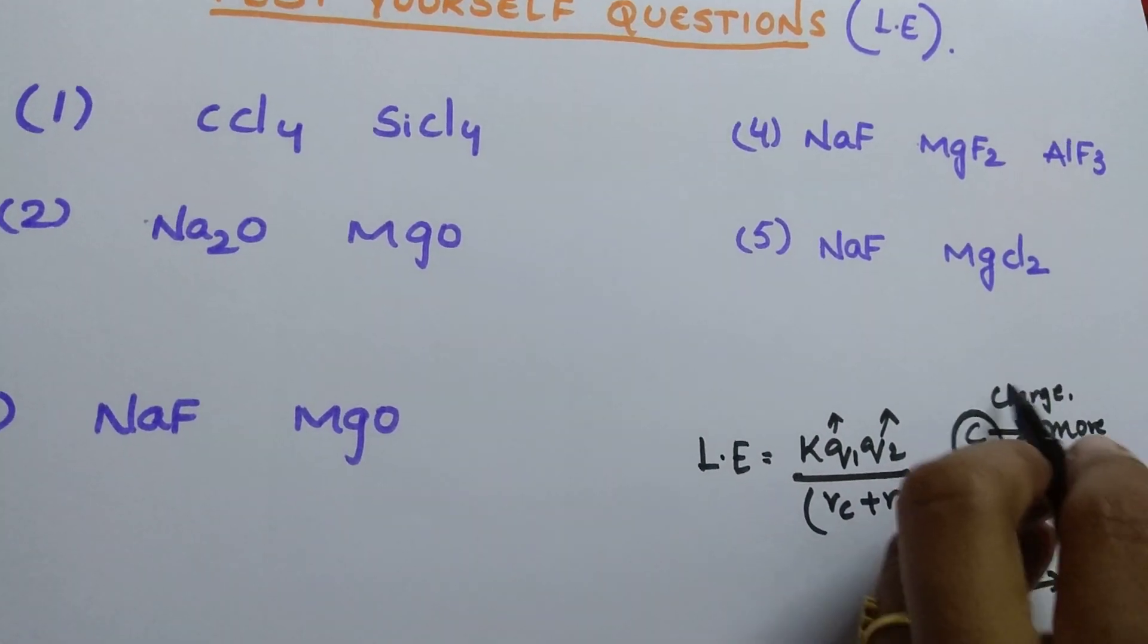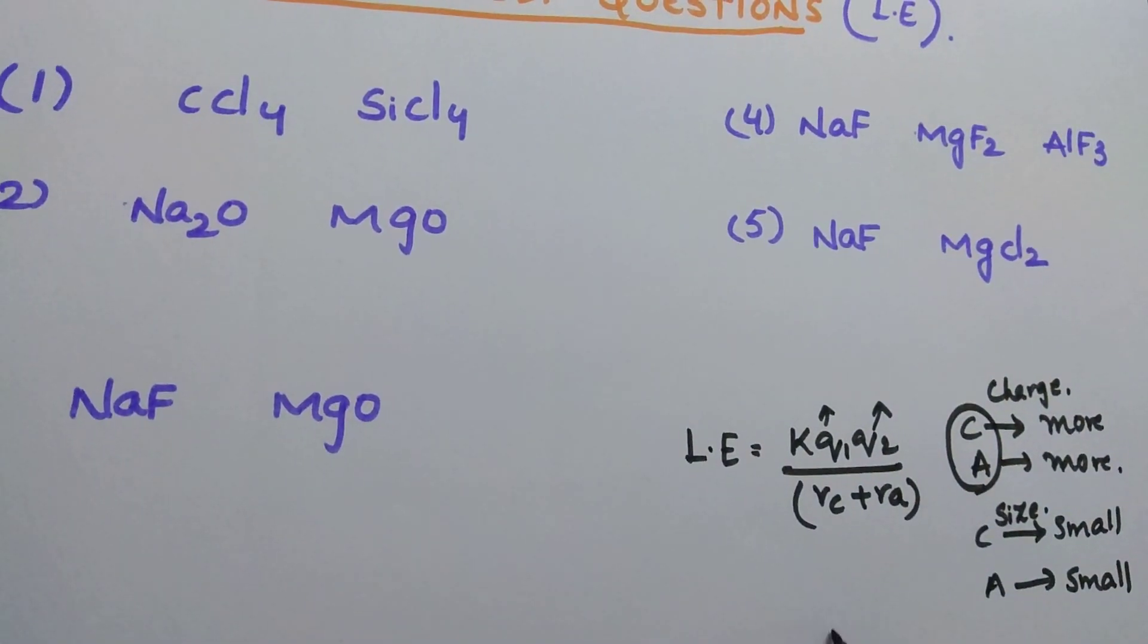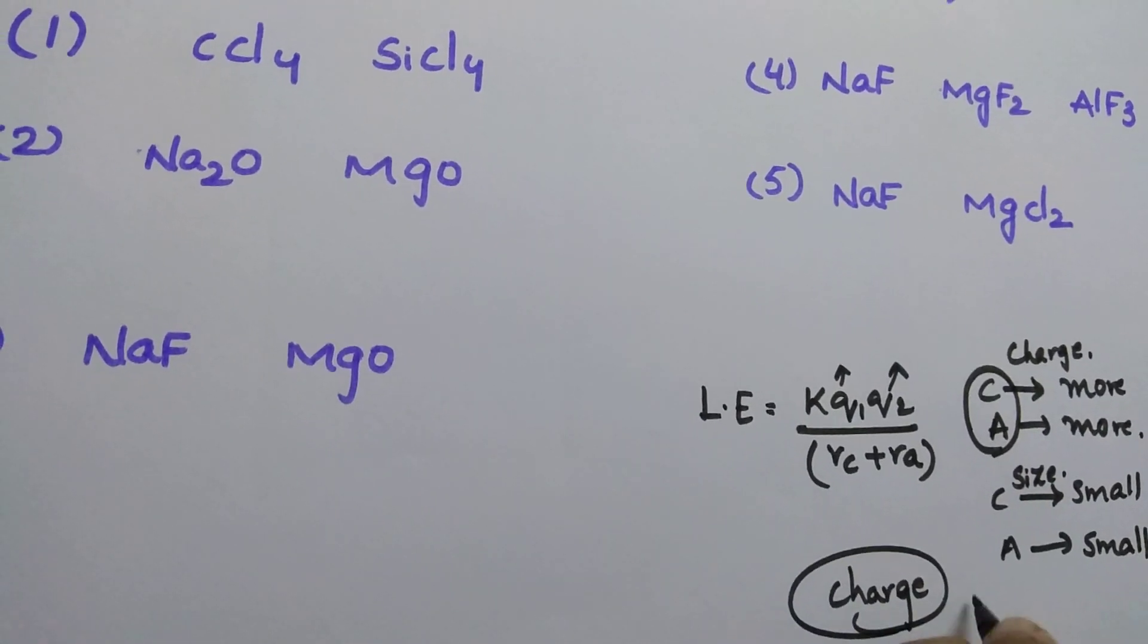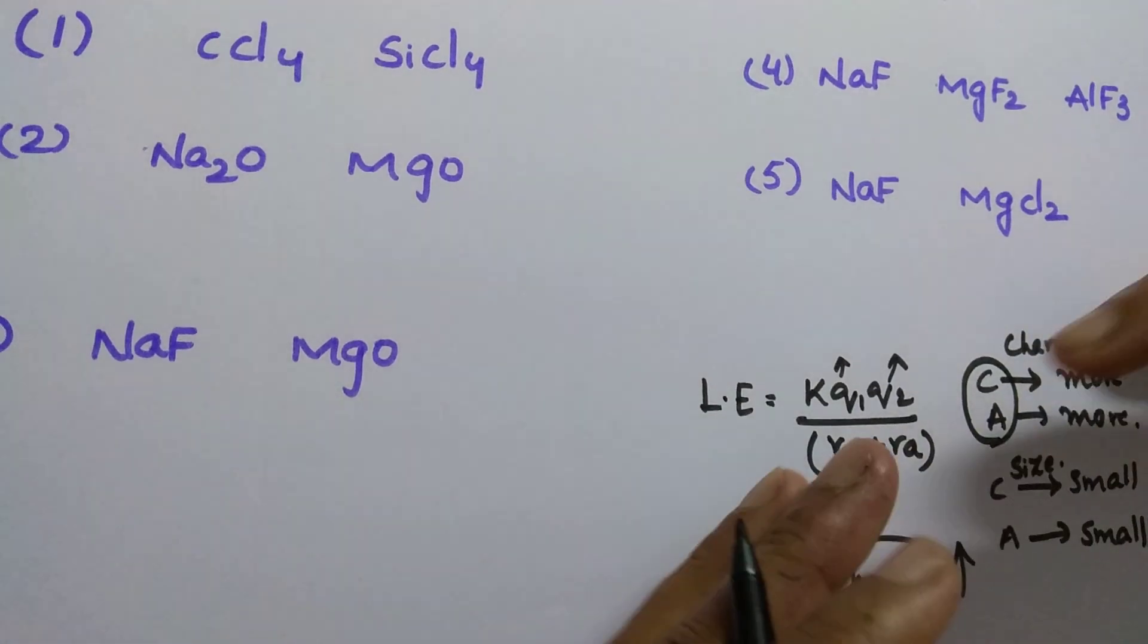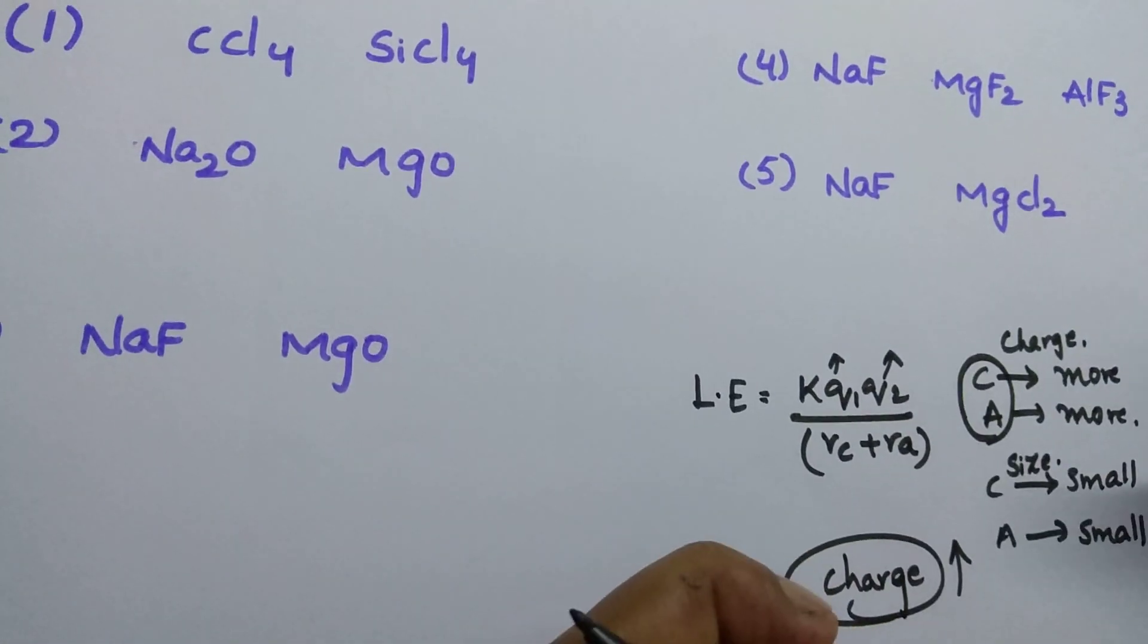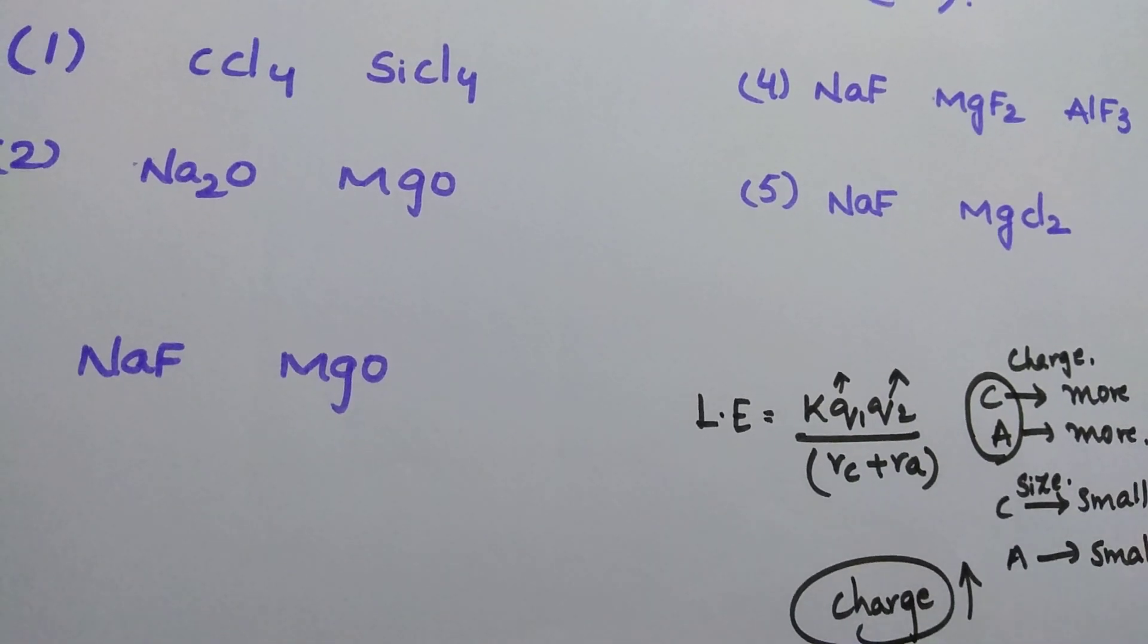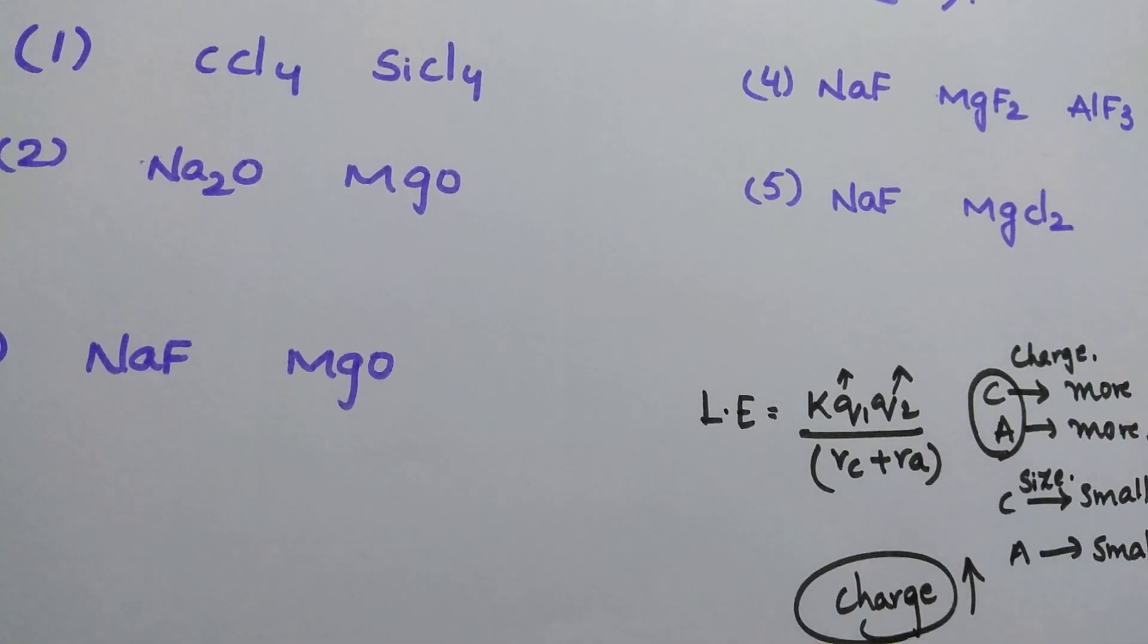When coming to the charge and size, what is the dominating factor? If two come in controversy, charge is a dominating factor. Because when charge increases, automatically the force of attraction between the cation and the anion increases. So charge is a dominating factor.